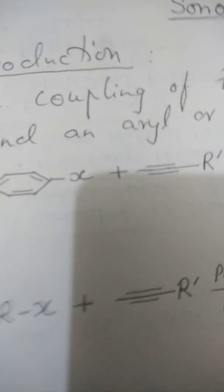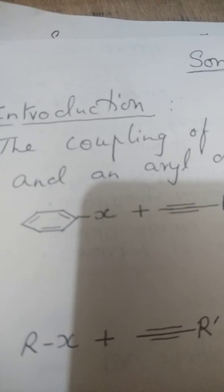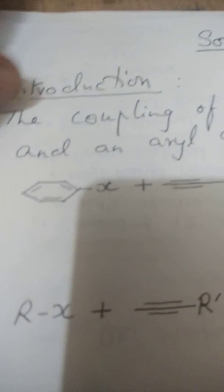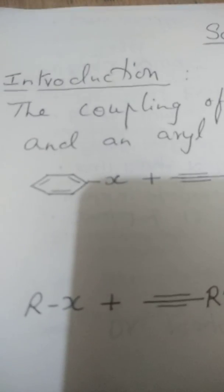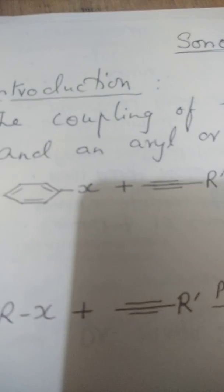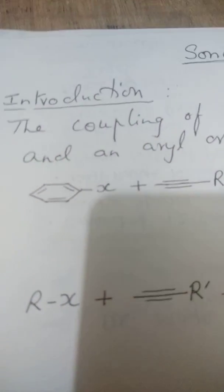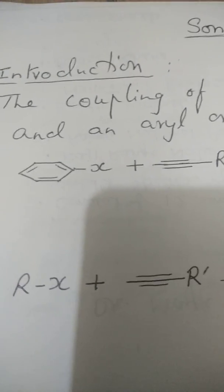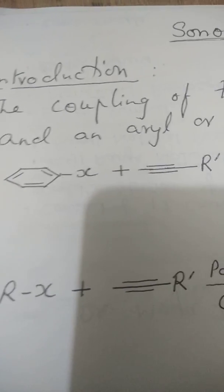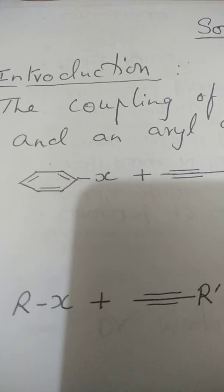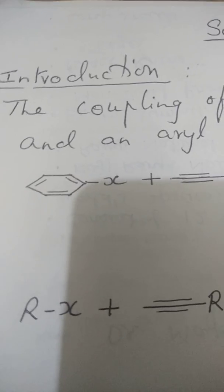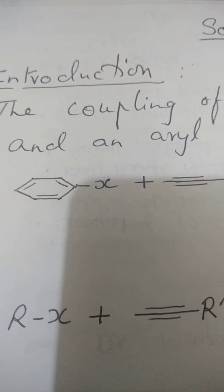This reaction was first reported in Tetrahedron Letters in the year 1975 and named after Kenkichi Sonogashira. Since then it has gained great importance and new work is continuously being added to it. New findings, variations, modifications to these reactions. It's often said that many organometallic catalyzed reactions to couple alkynes are termed as Sonogashira although conditions may vary. It's very useful in the formation of C-C bonds to form complex compounds.